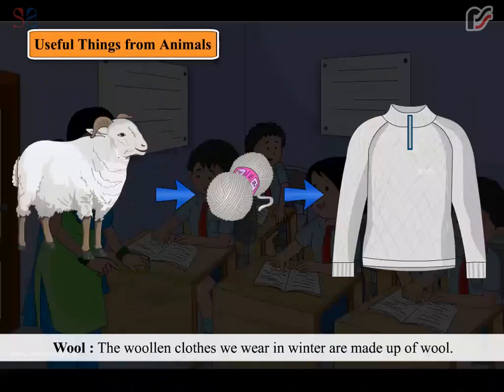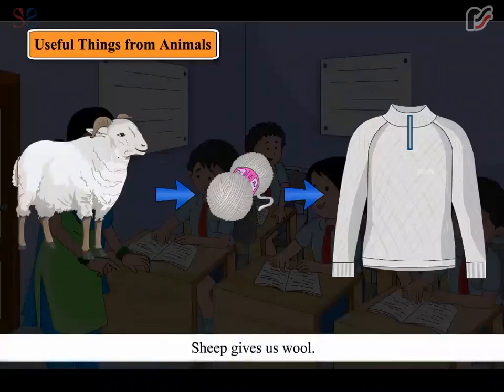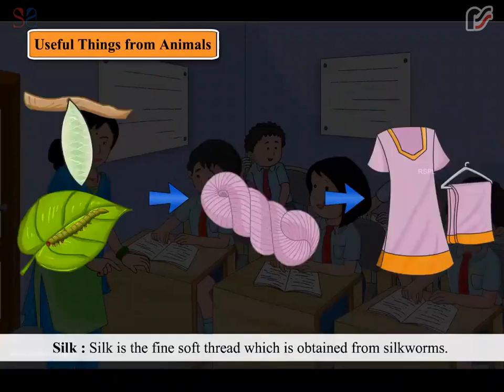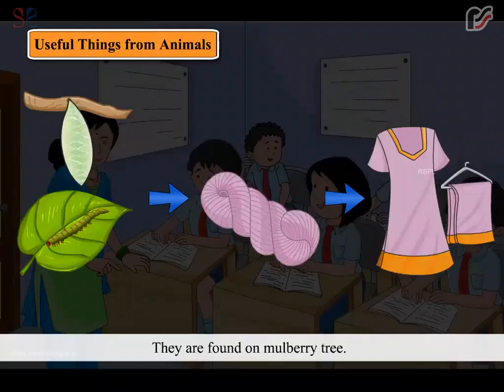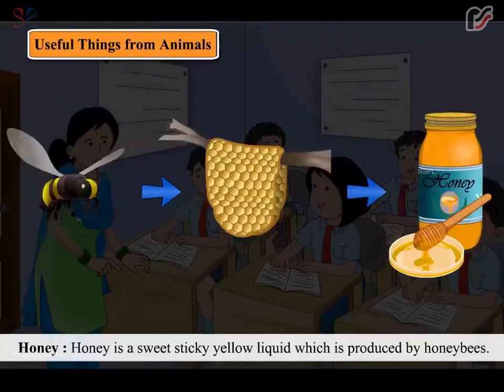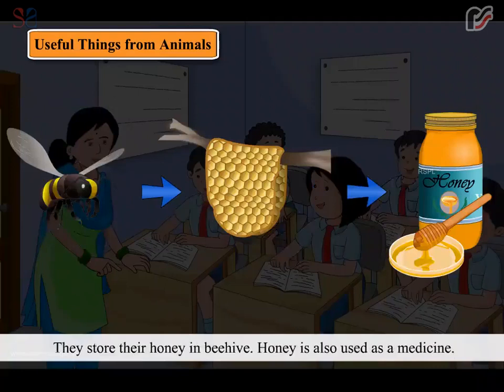The woolen clothes we wear in winter are made of wool. Sheep give us wool. Silk is the fine thread which is obtained from silkworms. They are found on mulberry trees. Honey is a sweet, sticky yellow liquid produced by honey bees. They store their honey in a beehive.